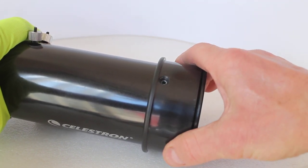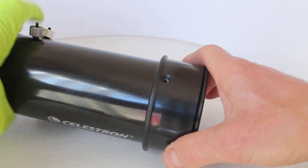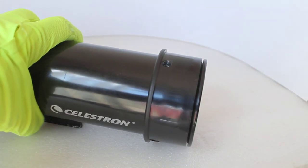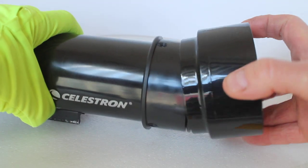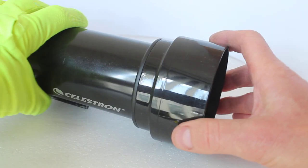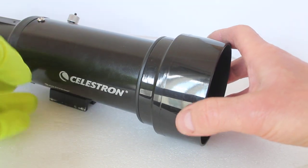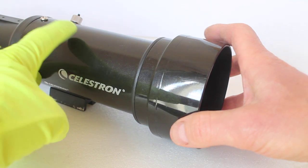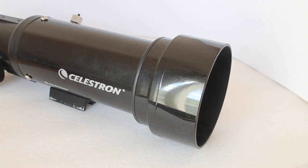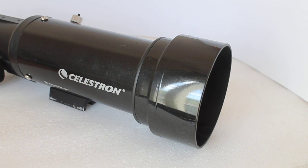Then put the lens cap back on and you're good to go—one dust-free Celestron Travel Scope 70. So thank you very much for watching. Please check out the links in the description below.